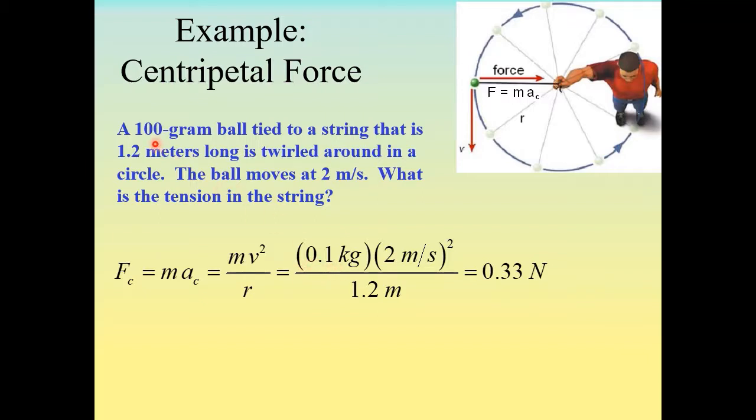The mass of the ball is 100 grams that's 0.1 kilograms. The velocity was given as 2 meters per second and remember to square that here and then we divide by the radius of the circle which is the length of the string in this case and that was given as 1.2 meters. So 0.1 times 2 squared divided by 1.2 gives us a tension of 0.33 newtons and that tension in the string is what makes this ball travel in a circle.